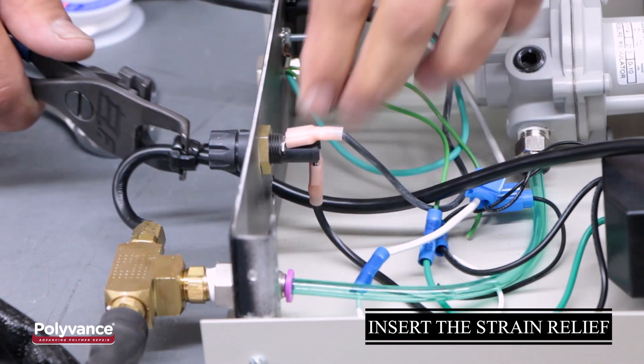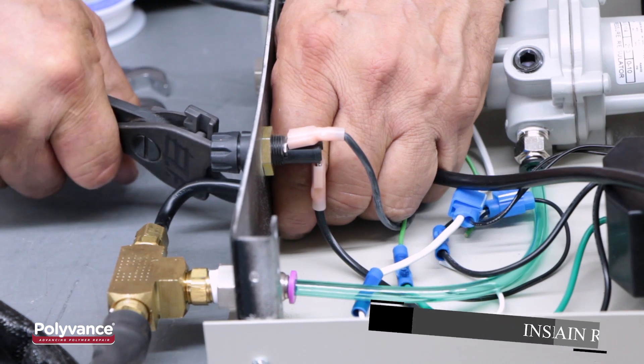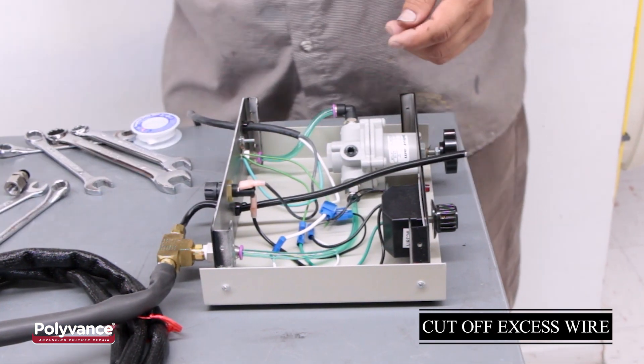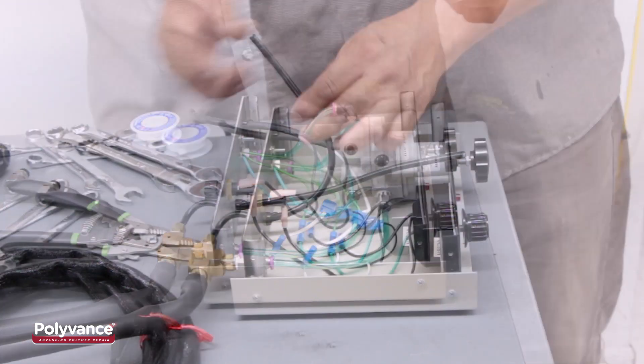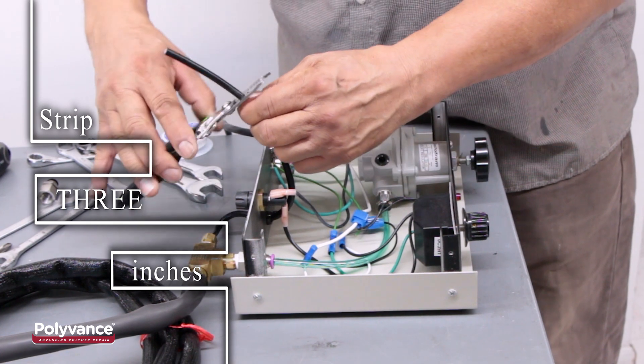Insert the power cord strain relief, leaving some slack in the cord outside the box. Cut off the excess wire, leaving about 9 inches. Strip three inches of outer sheath from the power cord.